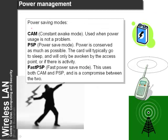For power management we can have different modes to save battery. Constant awake mode means no power saving, typically used in workstations. Power save mode PSP tries to save as much power as possible — the card goes to sleep until awoken by network activity. Fast PSP is a compromise between the two.